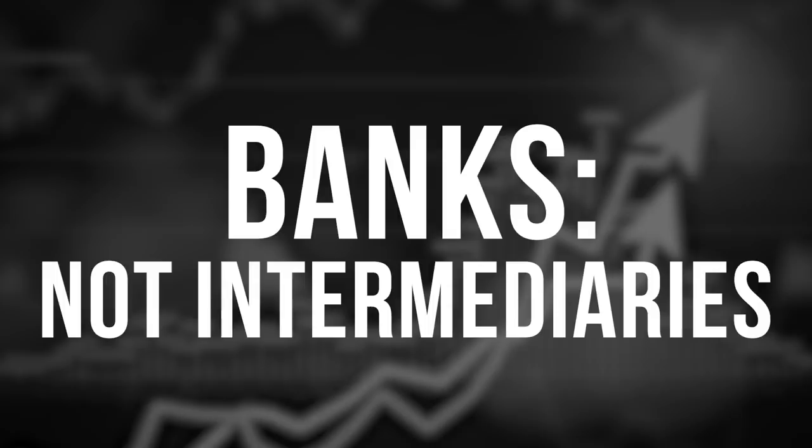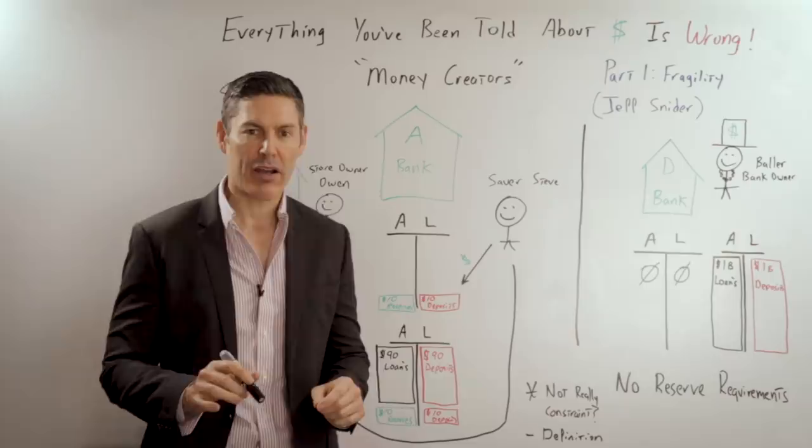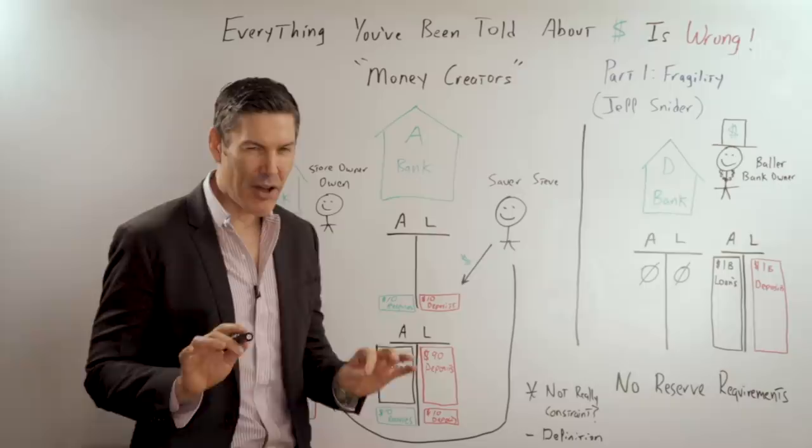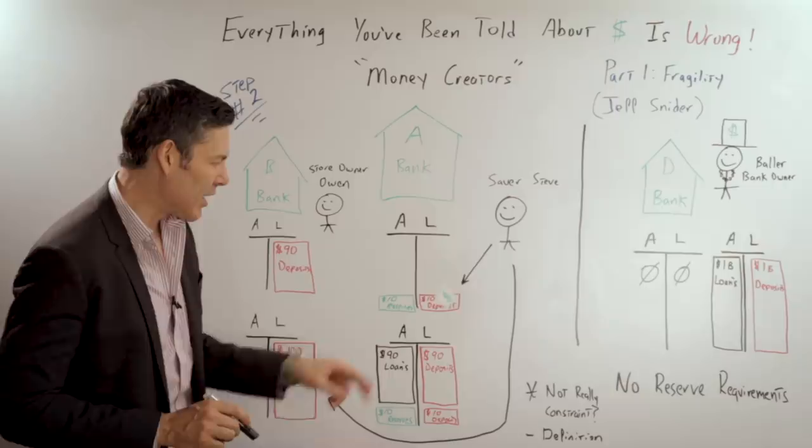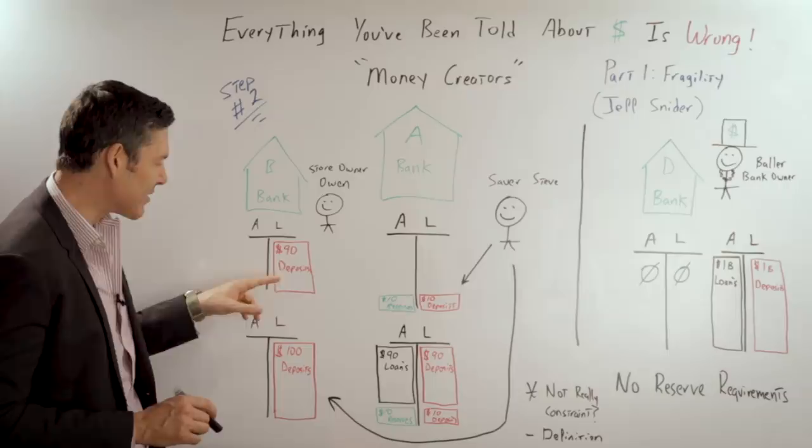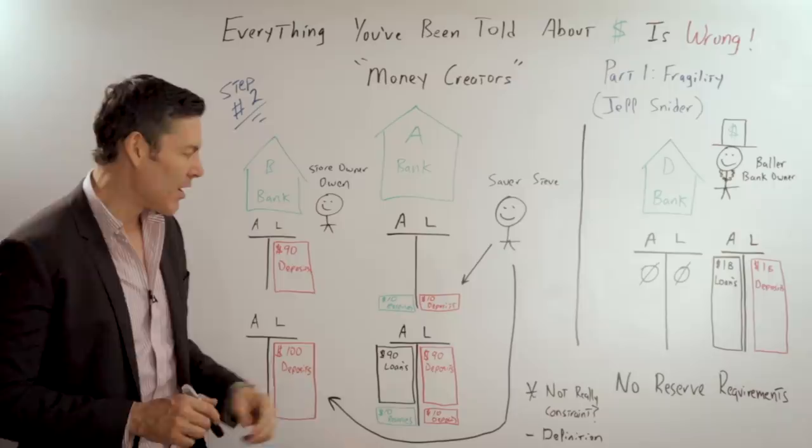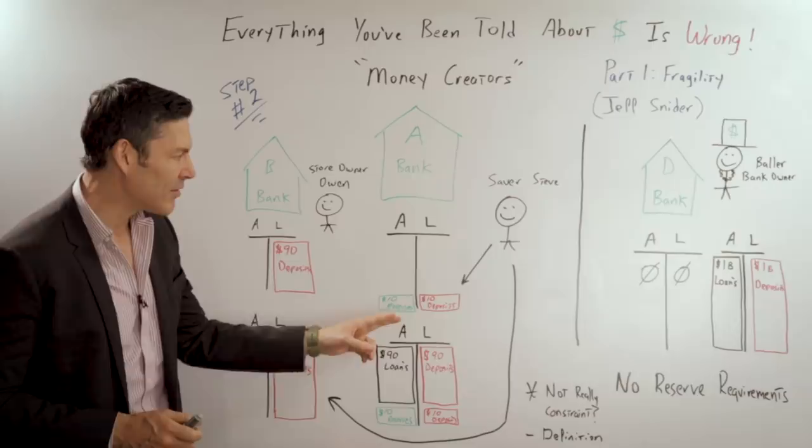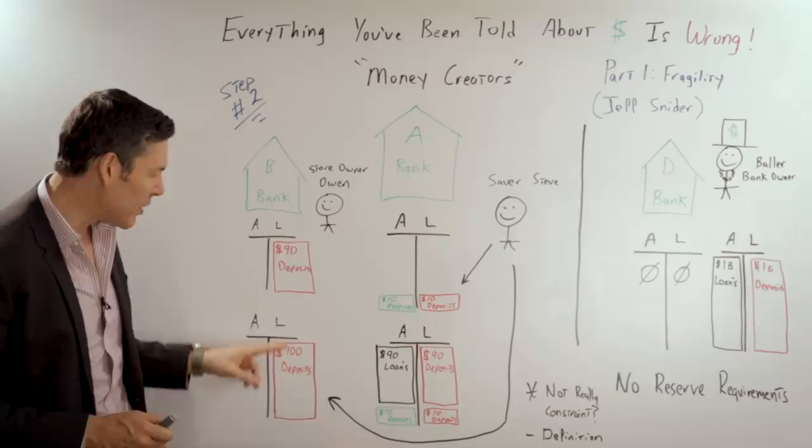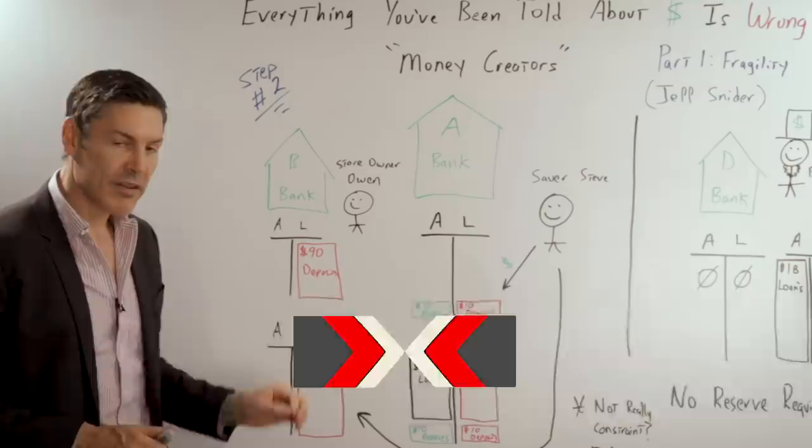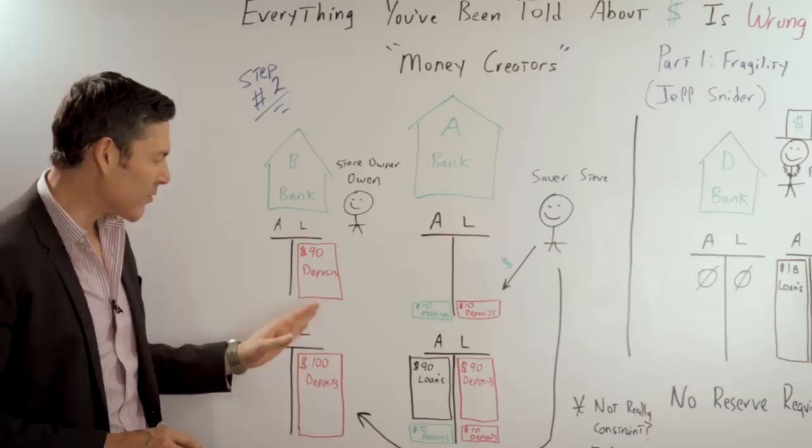And this is also why we need to start looking at banks as money creators and not intermediaries. You'll also hear academics and bankers always talk about how additional savings doesn't really mean additional deposits. And I know it sounds a little bit weird, but here's what they're talking about. So Steve saved 10 bucks, put that in his bank account. And over here, store owner Owen with Bank B has $90 in his checking account. So because Steve saved this $10 doesn't necessarily mean that it's additional deposits, because if he would have spent that $10 at Owen's store, well then Owen, instead of having $90 in savings, would have $100. The same amount of deposits we had before, but now it's in one bank account, as opposed to split up between two bank accounts.